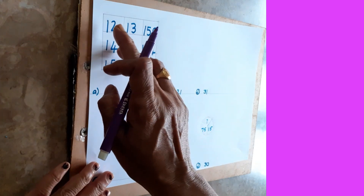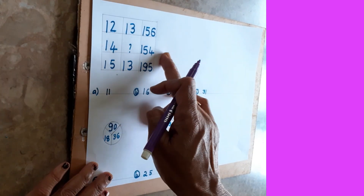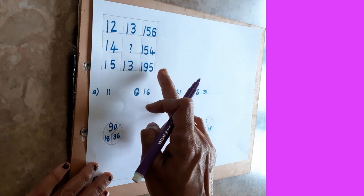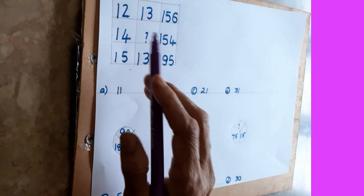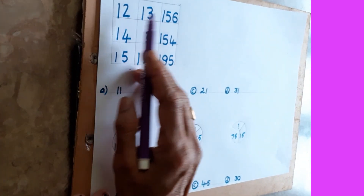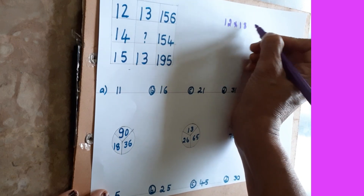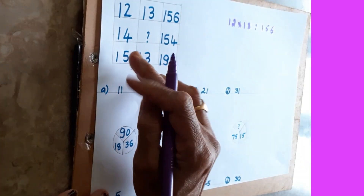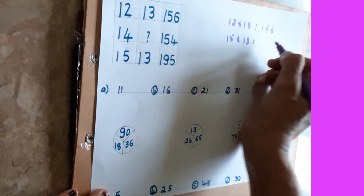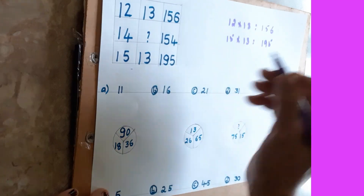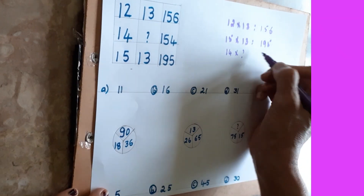See one more sum. They have given like this table: 12, 13, 156; 14 and you don't know this number, and 154; 15, 13, and 195. What you have to do — just observe first. 12 into 13 you do: 12 into 13 is 156. Then multiply 15 into 13 to get 195.